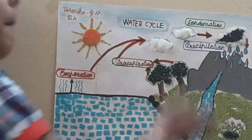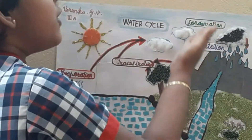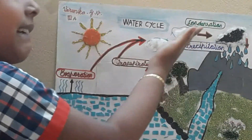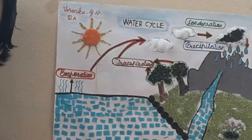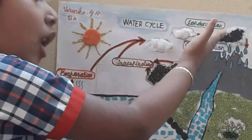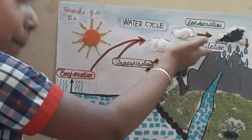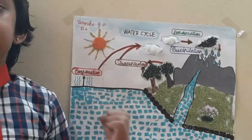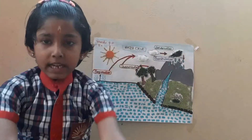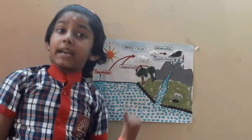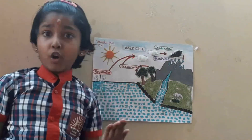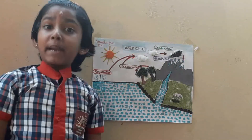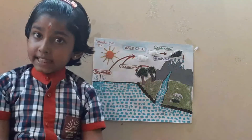Condensation. Water evaporates from water bodies into the air. It condenses and changes into tiny droplets, and then clouds are formed. Precipitation is responsible for bringing back the fresh water on the Earth.